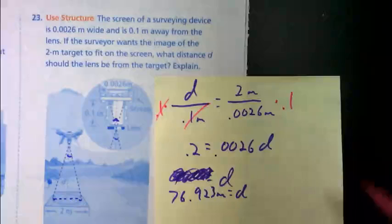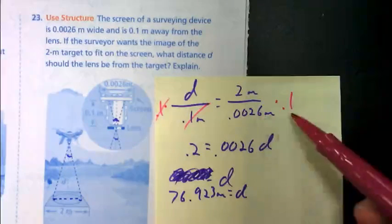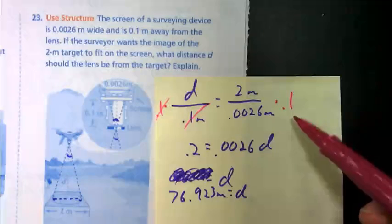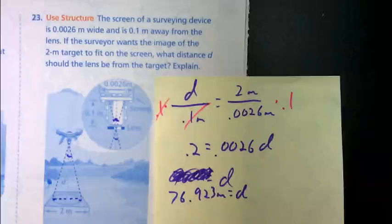So, here, if I wanted to get D by itself, I could just multiply off that 0.1. All of my values now are already over here on one side of the problem. So, if you have a calculator, you're just doing 2 divided by 0.0026 times 0.1. And you'd have your answer. So, again, remember, in math there's more than one way to do things.